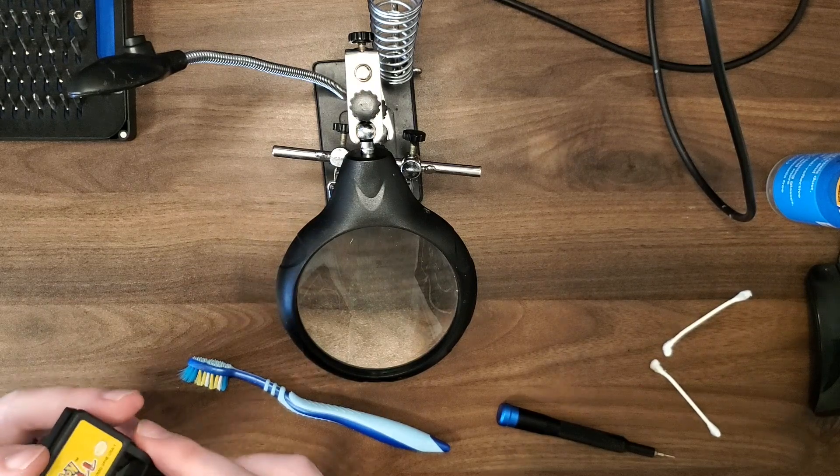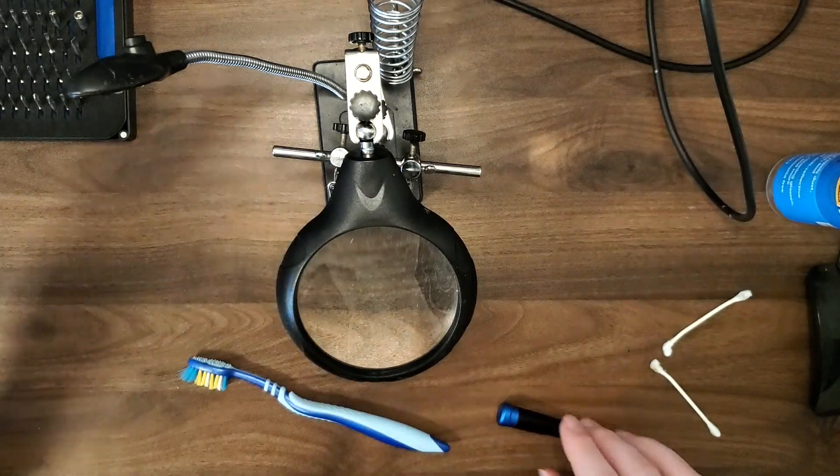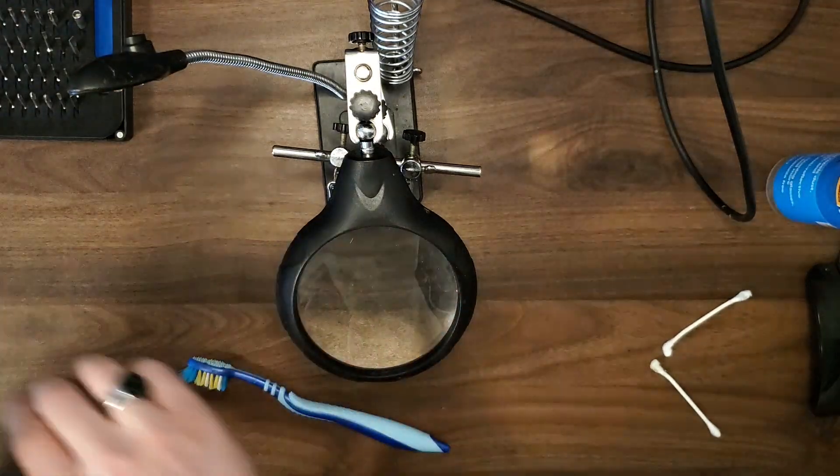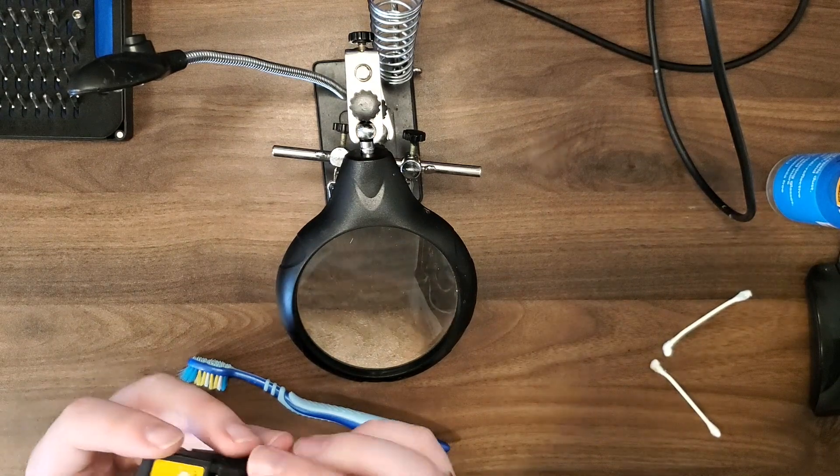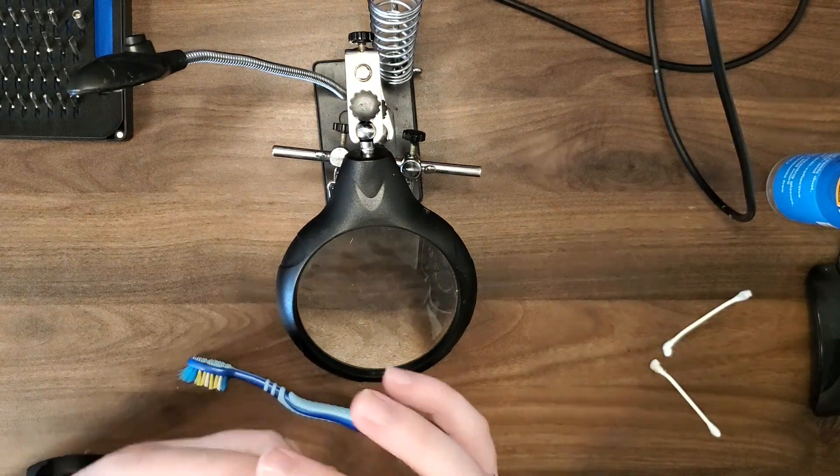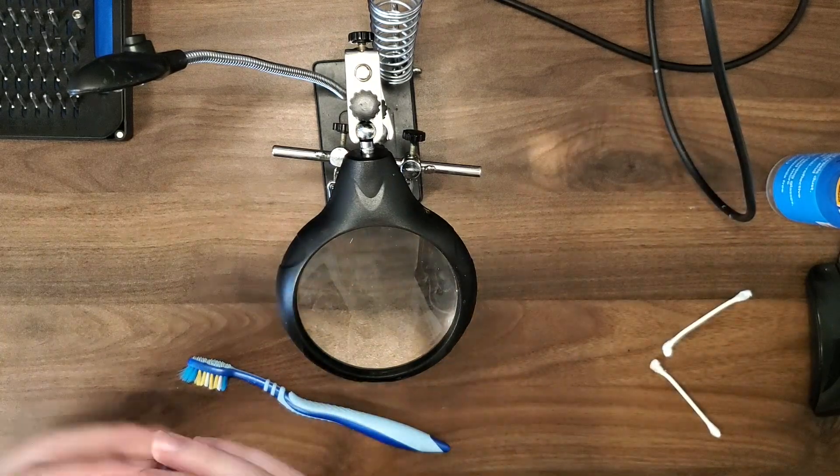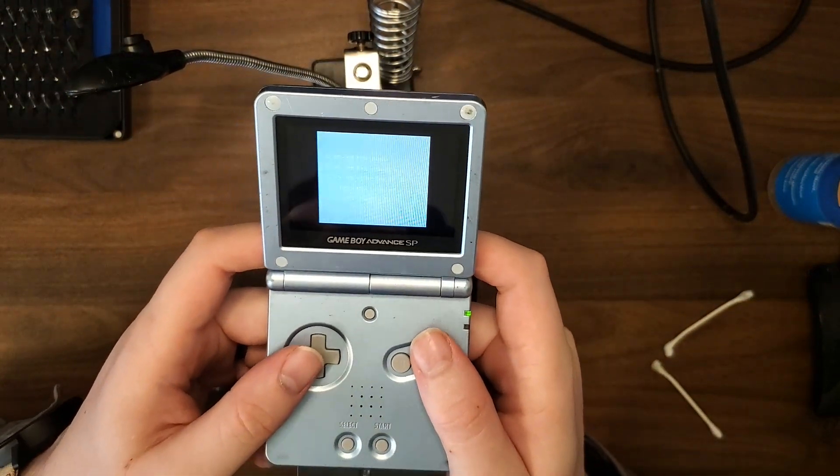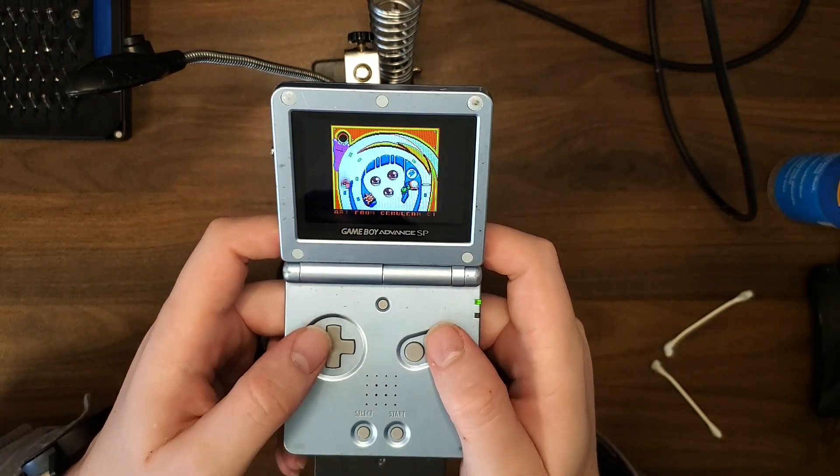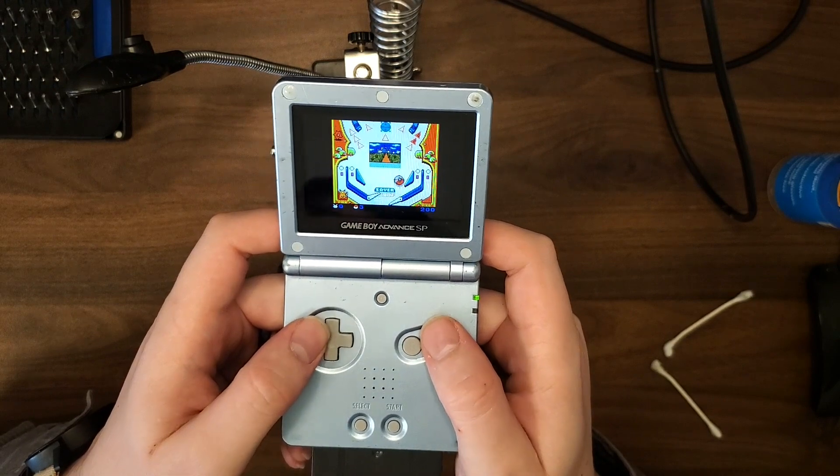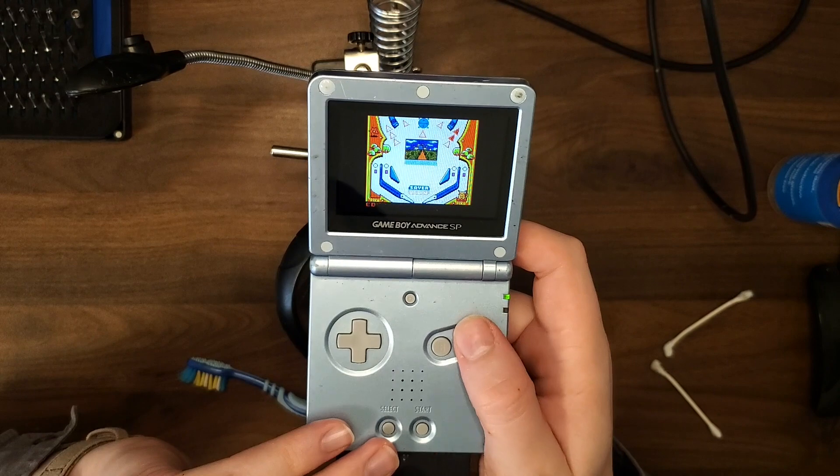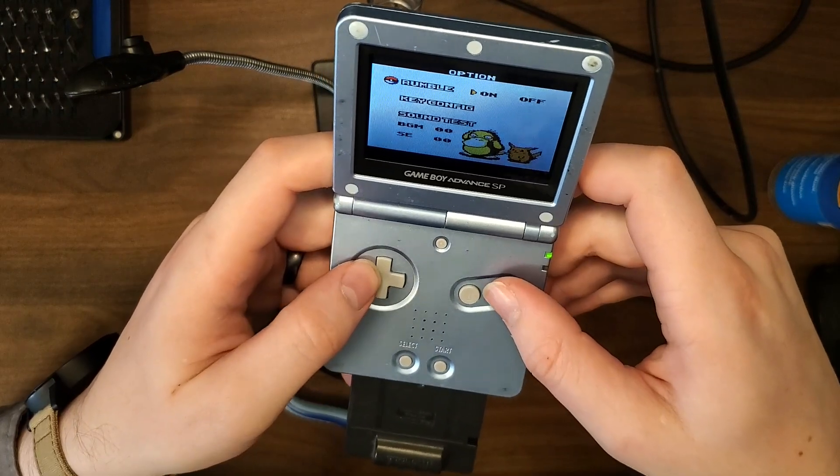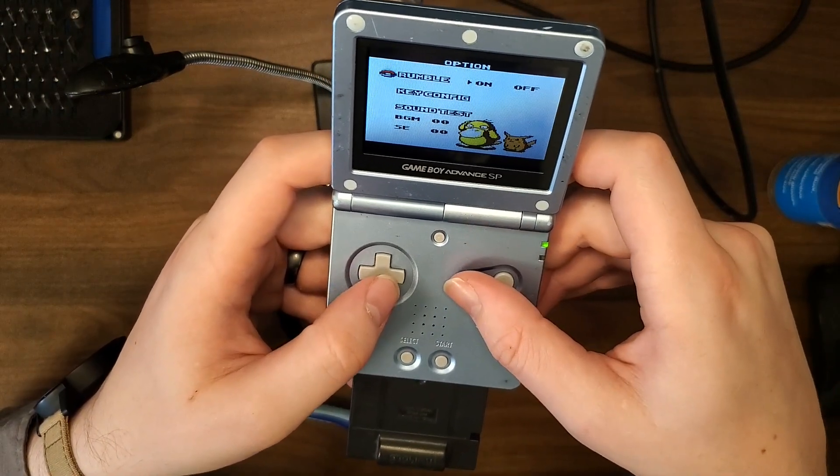Let's hook this back on there, close that up. Get those screws put back where they go, and then let's throw a battery in. Cover that up, there we go. Then let's throw this back in and see if it works. So we got the Nintendo logo, that's good. I'm not sure when you're supposed to feel rumble. I'm not feeling it. I would assume in the rumble option here you would feel it between on and off.